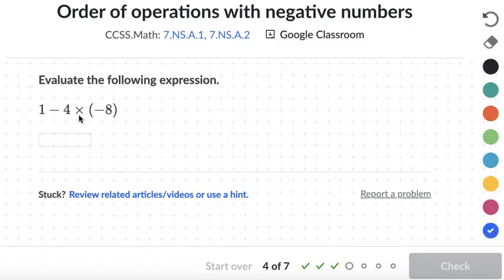So here we have subtraction and multiplication. We multiply before we subtract. So we are going to work out 4 times negative 8. So 1 just tags along. 4 times negative 8 equals negative 32.